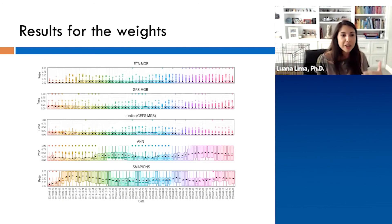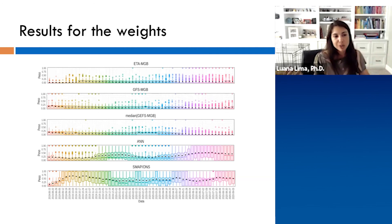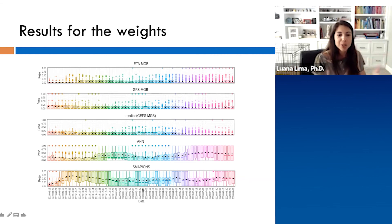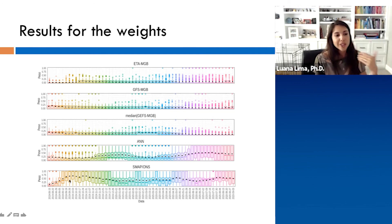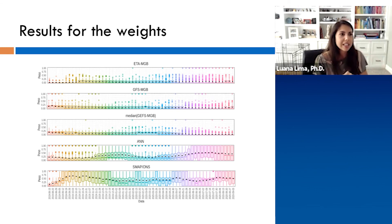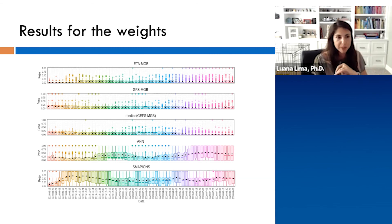The BMA approach weights the nine models differently depending on which time of year we're predicting. For some months, the neural network performs best; for others, the physical model is best. Combining all these models leads to better forecasts overall. This approach is being applied to the hydro system, but it could equally be applied to solar, wind, or demand forecasting — it has a wide range of applications.